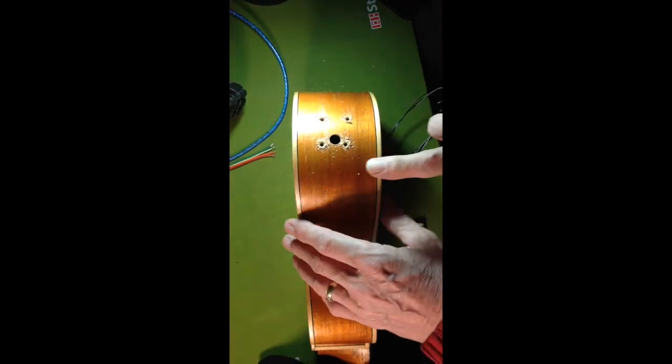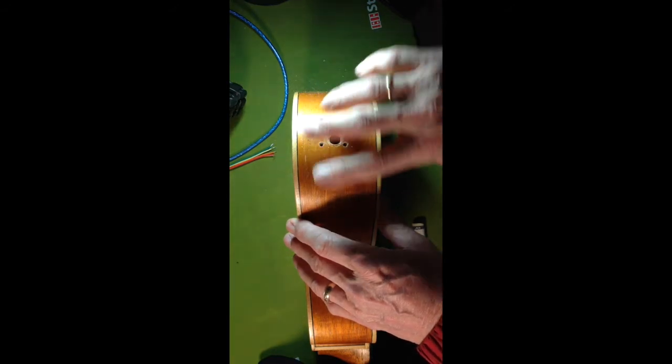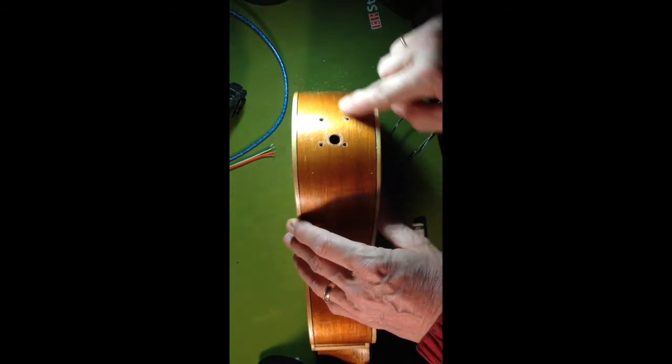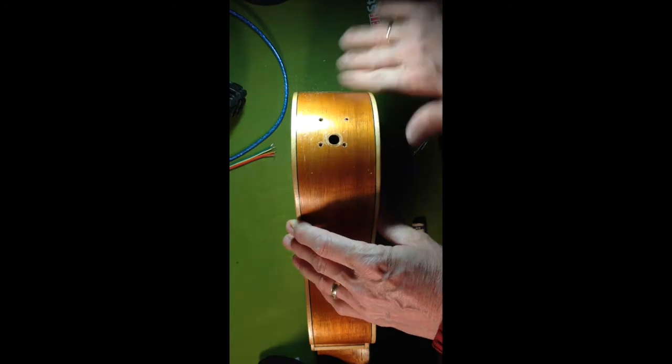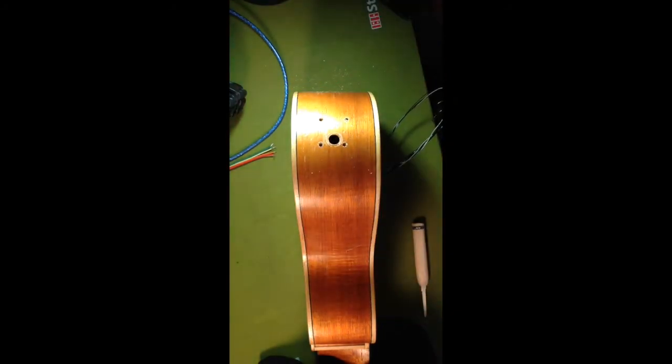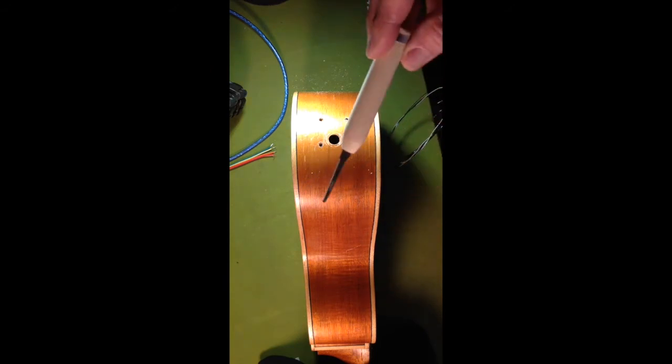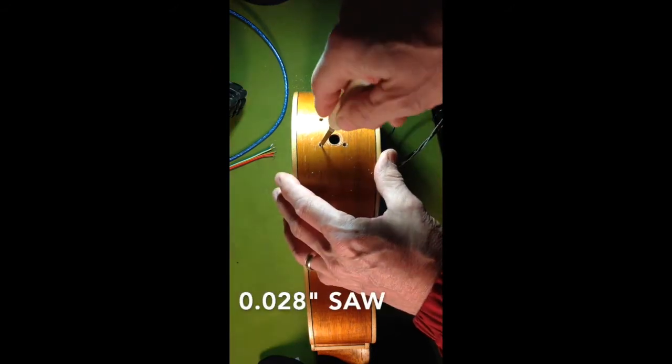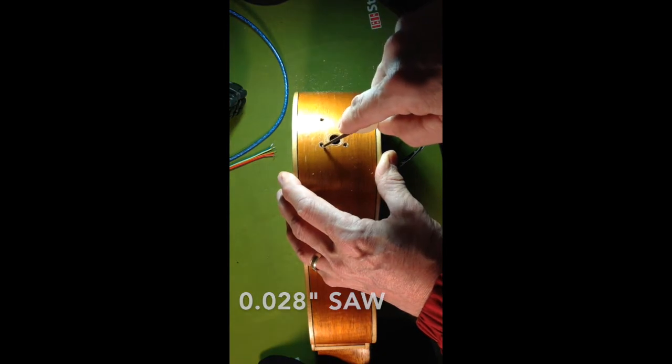I'm just going to flip this sawdust down onto the bench because I may need that for something else. So here's where we're going to be going, and here's a 28 thousandths saw. I'm going to get that over in the corner a little bit.